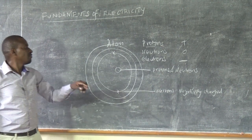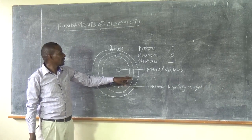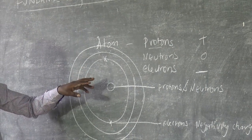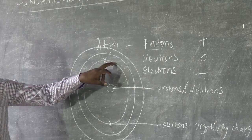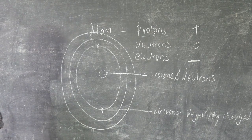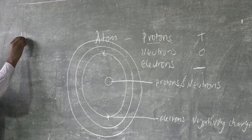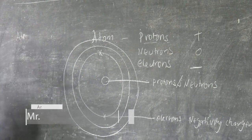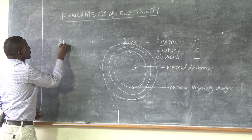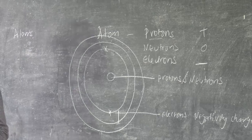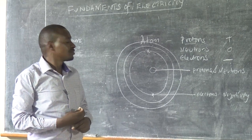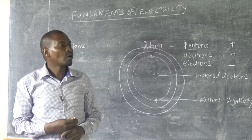We have orbits or shells whereby electrons move around the nucleus. The shells are named from the innermost to the outermost. All atoms have an atomic number, and this atomic number gives the structure of the atom.